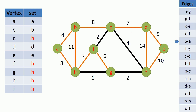The next remaining minimum weighted edge is the edge between B and A. A vertex is currently on set A and B vertex is currently on set B. So these two vertices currently belong to different sets, therefore we can add the edge between B and A vertices to our MST. Then we are going to union the sets by changing B vertex set to A.